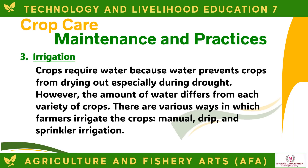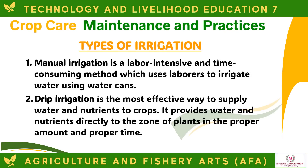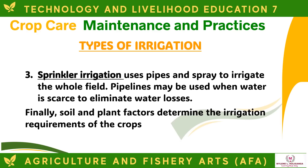Next is irrigation. Crops require water to prevent drying out, especially during drought; however, the amount of water differs for each variety of crop. There are various irrigation methods: manual irrigation, which is labor-intensive and uses laborers with water cans; drip irrigation, the most effective way to supply water and nutrients directly to the root zone in the proper amount and at the proper time; and sprinkler irrigation, which uses pipes and spray to irrigate the whole field. Soil and plant factors determine the irrigation requirements of the crops.